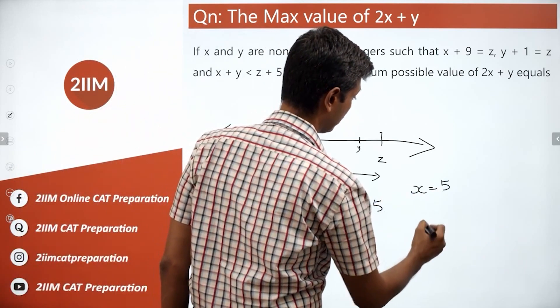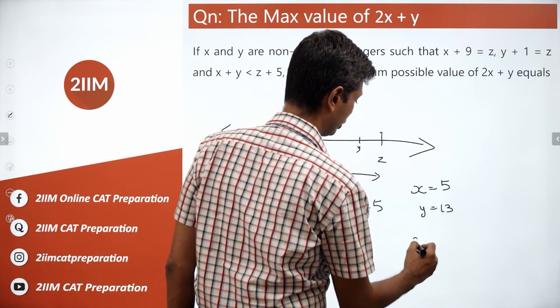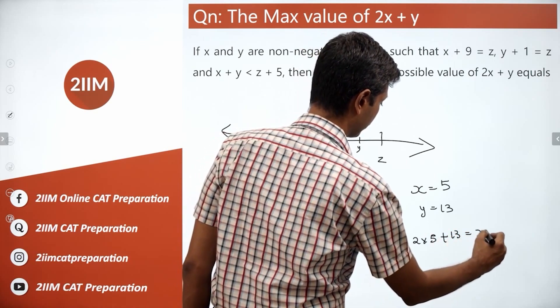If x were 5, then y would be x plus 8, which is 13. 2x plus y equals 2 into 5 plus 13, 10 plus 13, 23. That's the maximum.